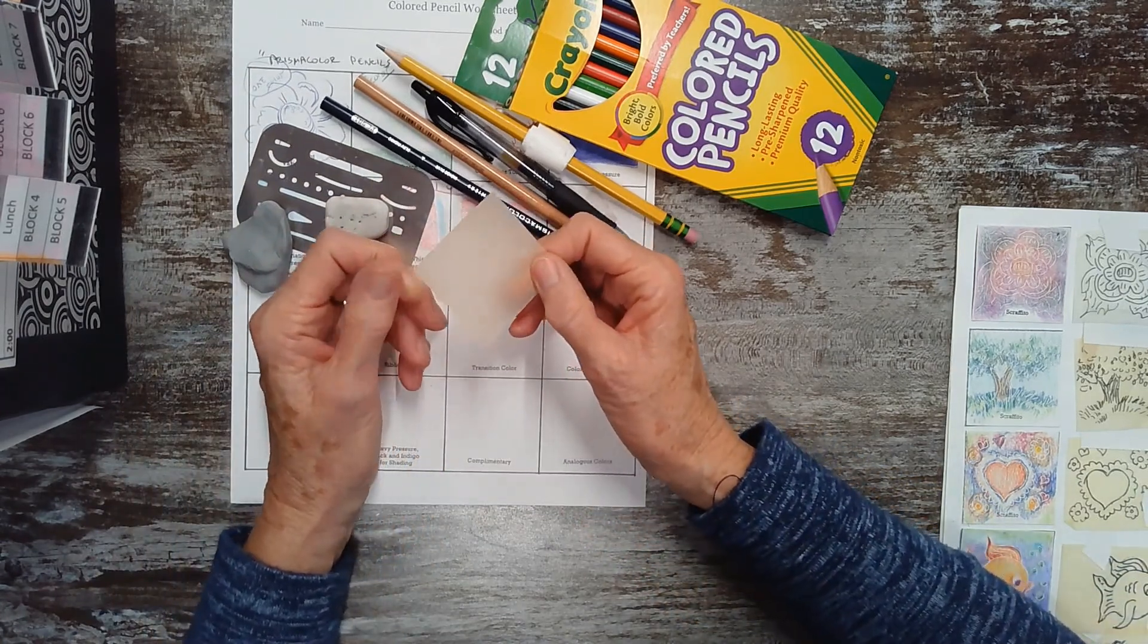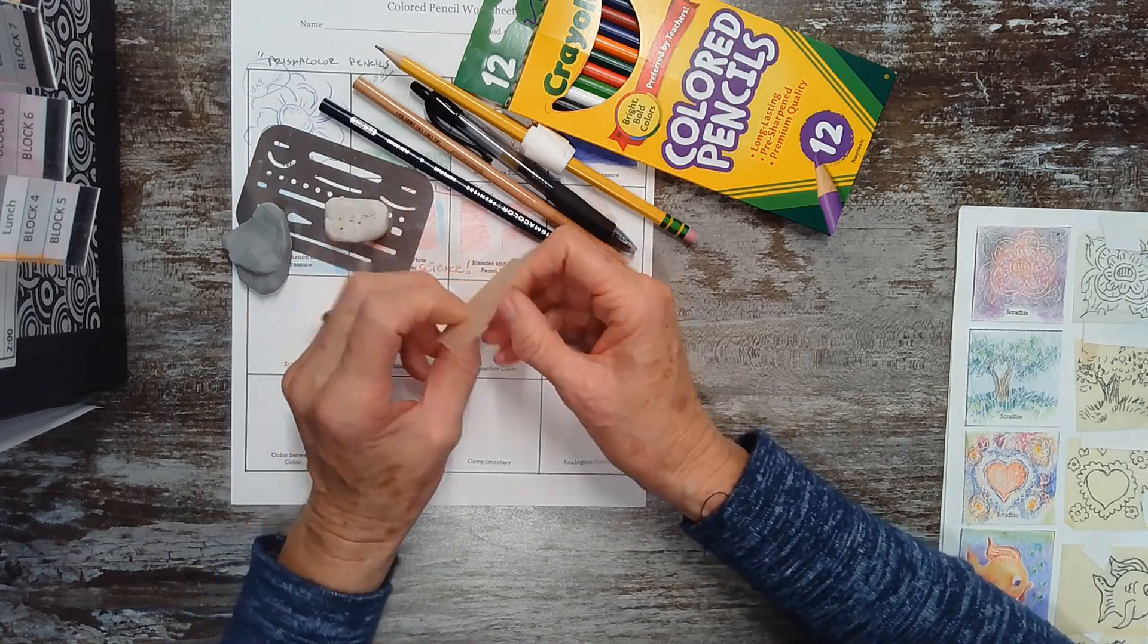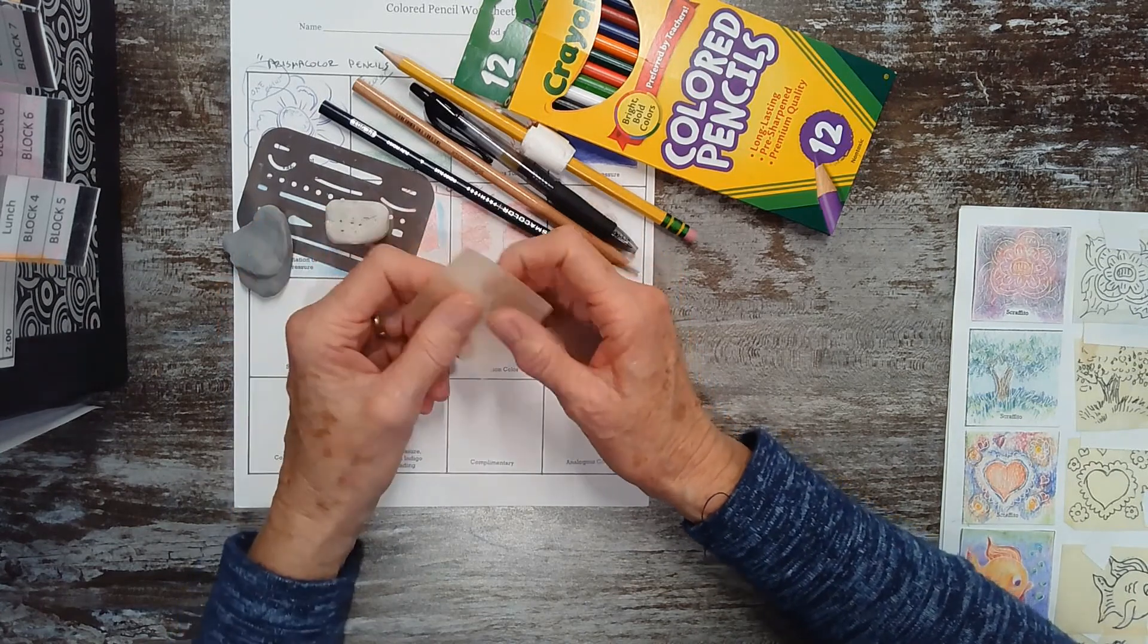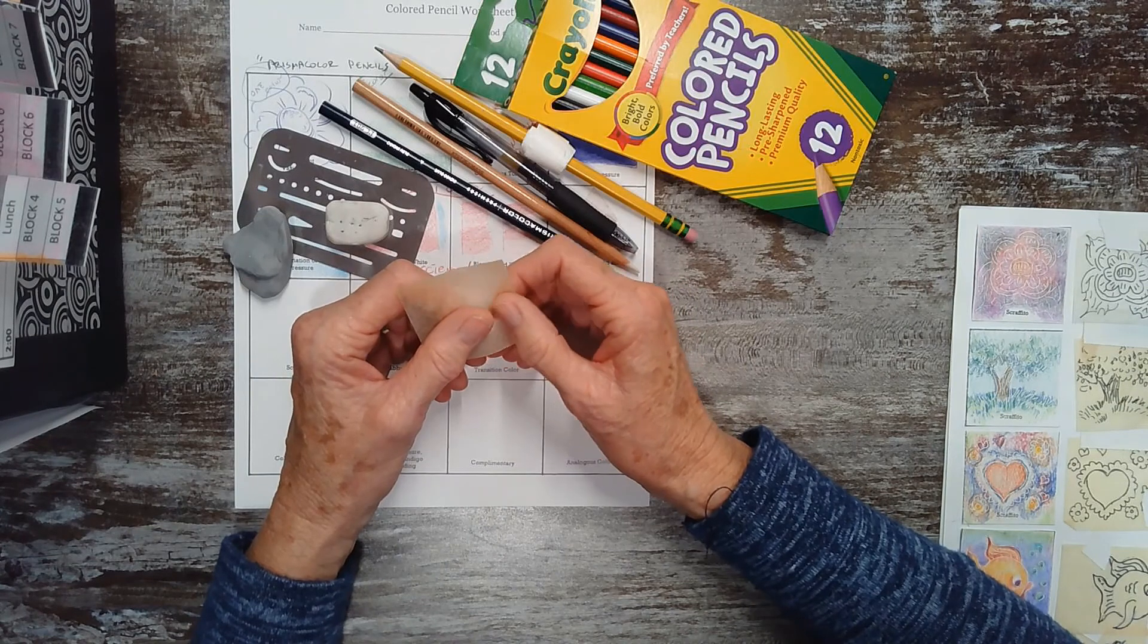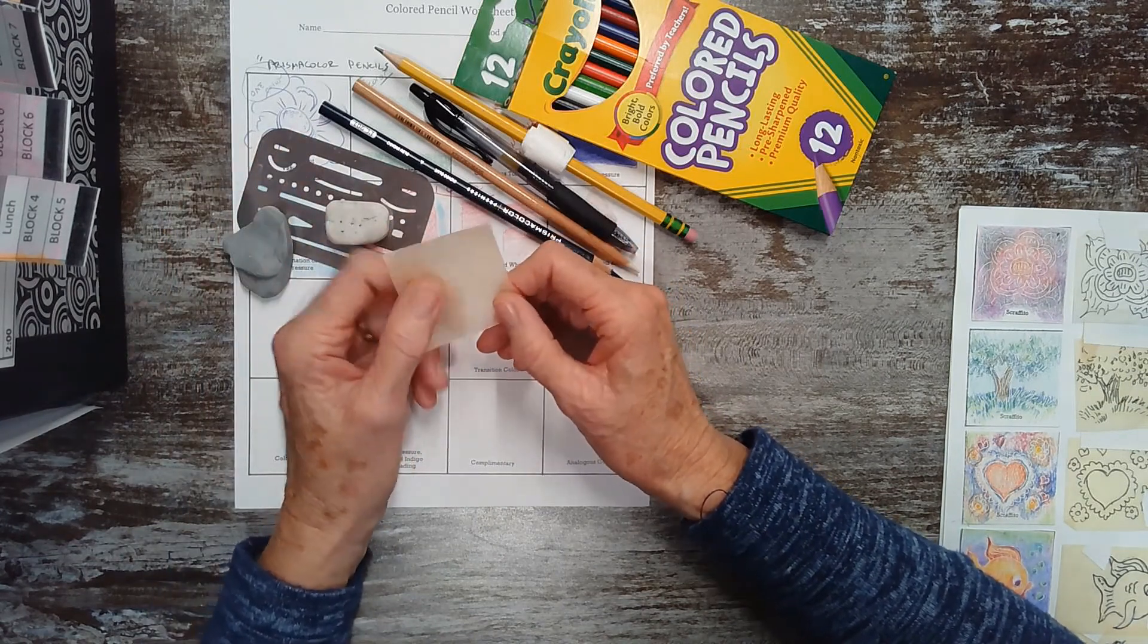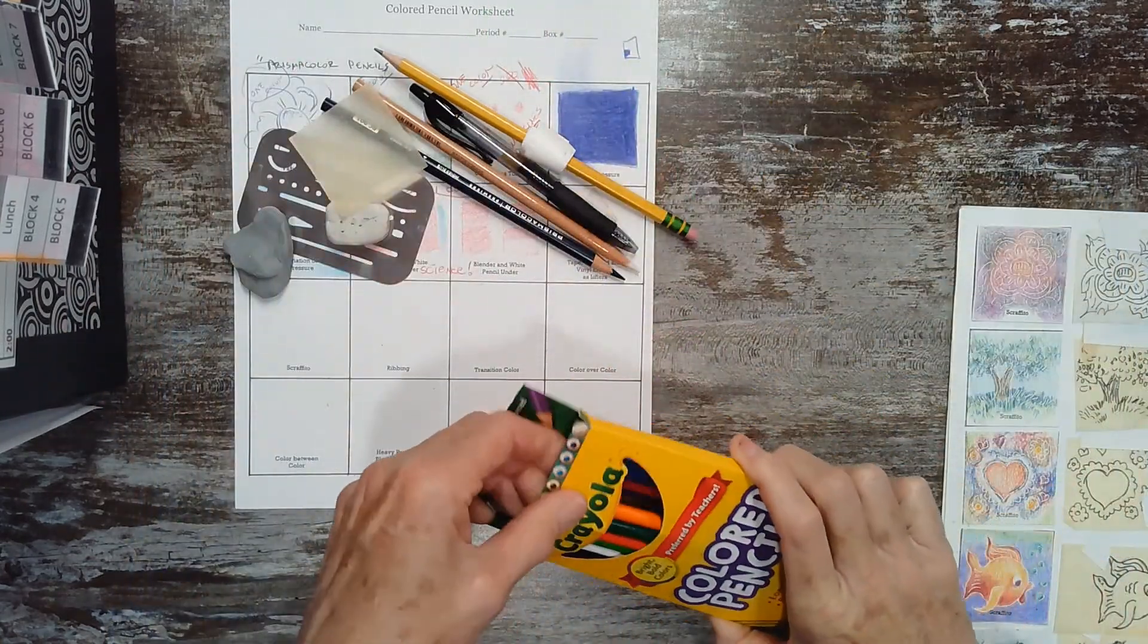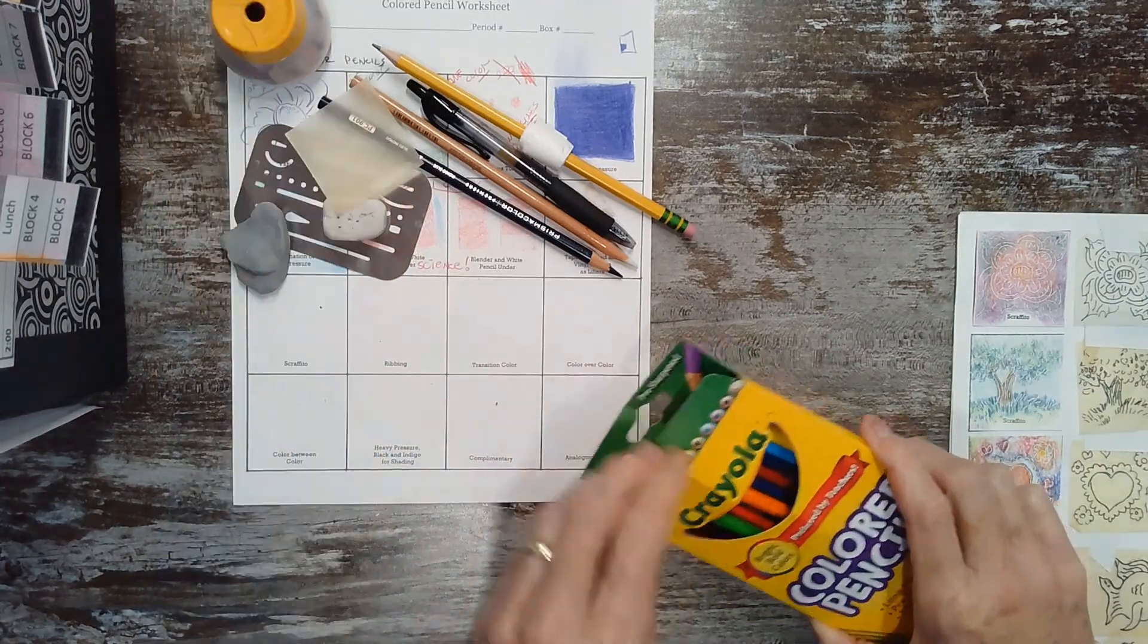You also need a thin piece of paper. What I have here is a piece of tissue paper, so if your parents have this kind of paper around, usually it's white for wrapping presents with, that would be great. If the thinnest paper you have around the house is just a piece of copy paper, that's fine. You just want a thin piece of paper. Oh, you also need a pencil sharpener.